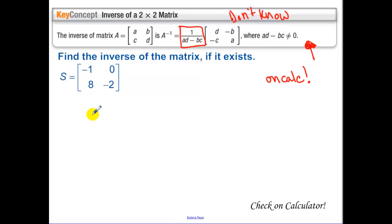Going back here, our inverse matrix, remember that's the notation for inverse matrix, is negative 1, 0, negative 4, and negative 1 half.